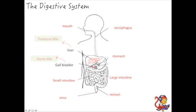Behind the stomach area, next to the stomach, we've got another organ involved in the digestive system and that's the pancreas. This is a really important organ — it produces loads of enzymes that are involved in the digestive process. It's a gland that produces lots of useful enzymes that help to break down the food.